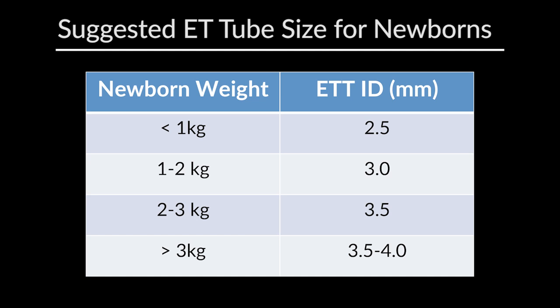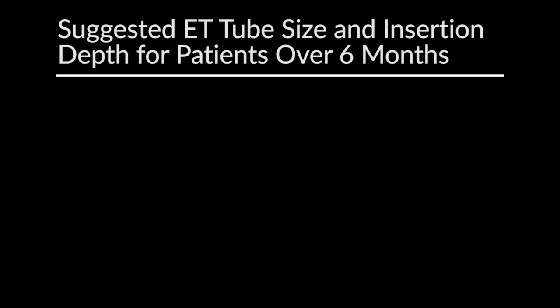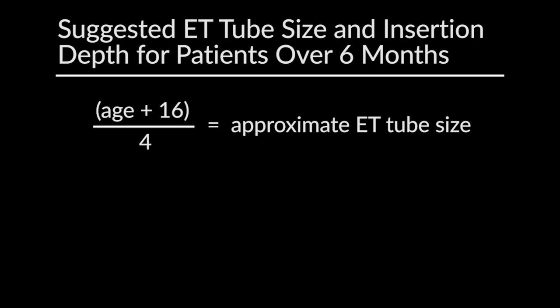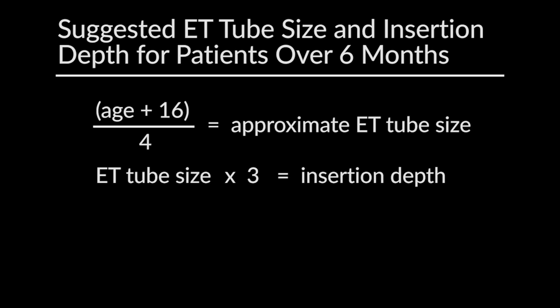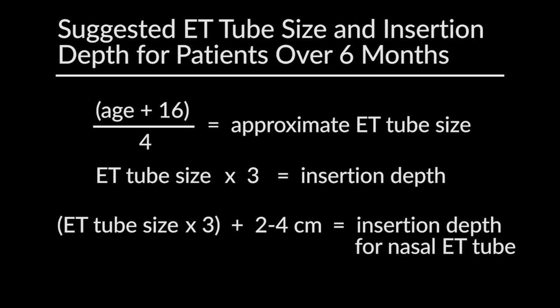Here is a chart of suggested size endotracheal tubes for the newborn ranges. Once we get to six months of age or greater, we may use a formula to estimate the patient's endotracheal tube size: your age plus 16, divided by 4, will give you an approximate size. We may then multiply that size times 3 to approximate the depth of insertion. For all patients, we would add 2 to 4 centimeters for a nasal intubation.